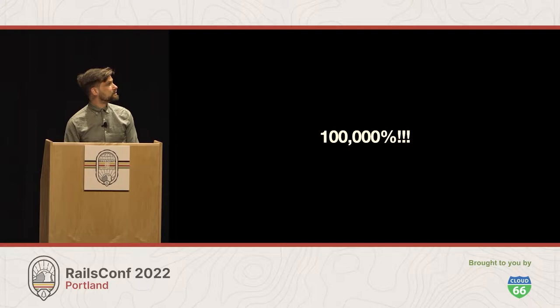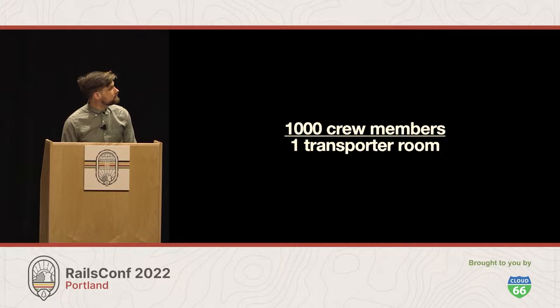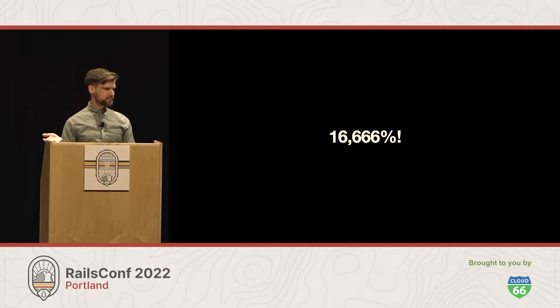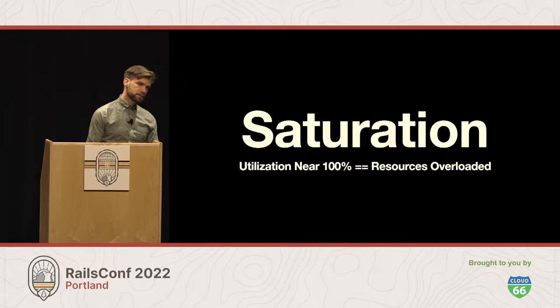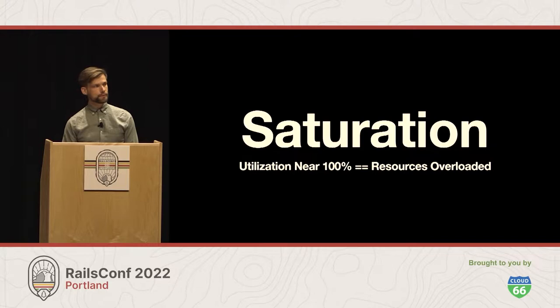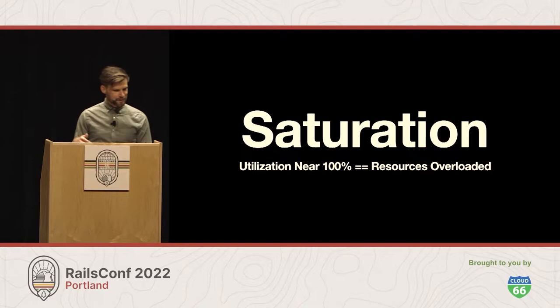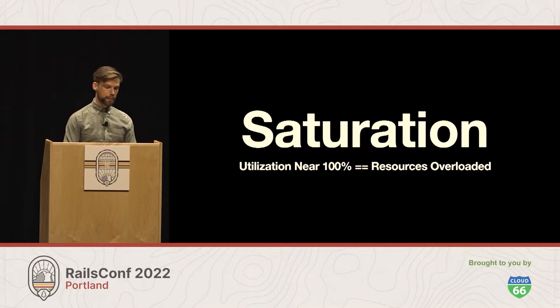So we're going to have saturation — we're over 100%. People are going to have to wait, and waiting sucks, especially in an emergency. One transporter room can do six beam-outs at a time and that takes five seconds, so now we're down to about 16,000% utilization — still way oversaturated. We want to get that down to 100%. Saturation is when utilization is near or at 100% and your resources are overloaded. This is an exponential problem: if your utilization is above 90%, the closer it gets to 100%, the more queuing latency will be affected.